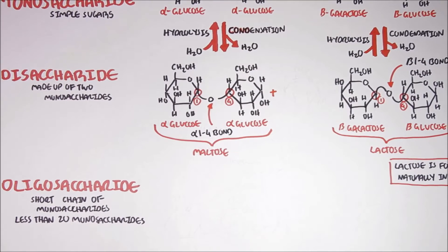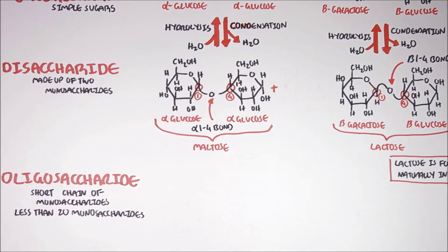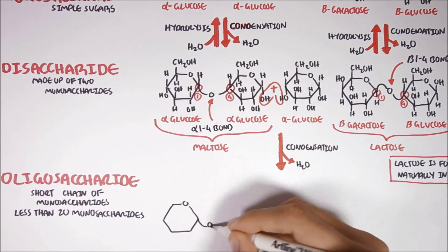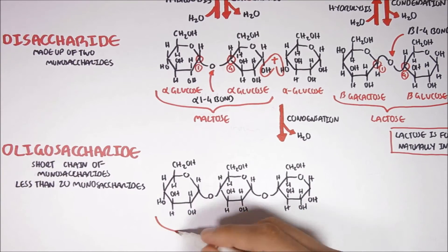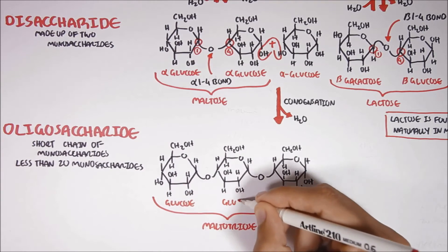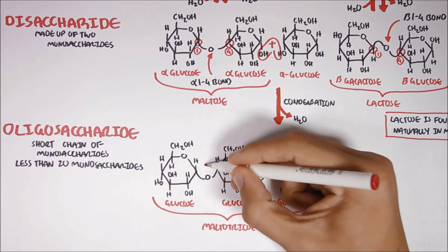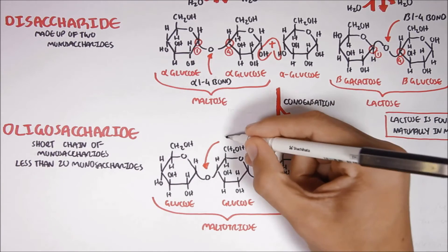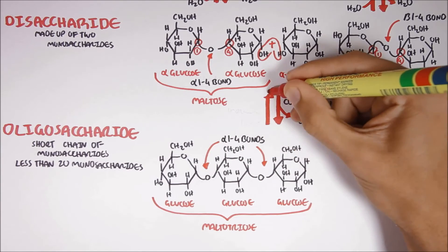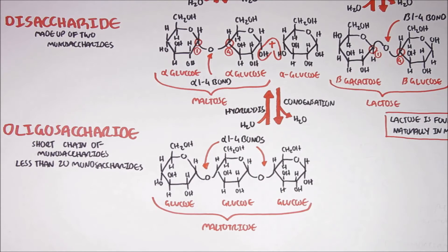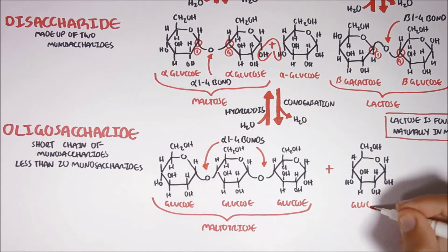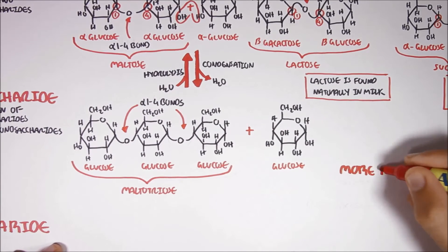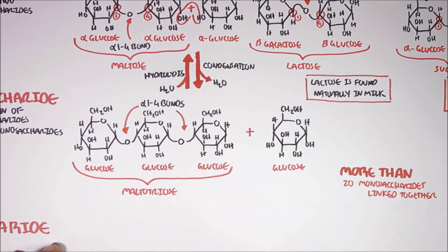For an example of an oligosaccharide: if we take maltose and add another glucose molecule to it through a condensation reaction, we can form an additional alpha-1,2,4 glycosidic bond. This oligosaccharide is called maltotriose — tri as in three. Maltotriose is made up of glucose molecules linked together by alpha-1,2,4 glycosidic bonds. To break down these bonds requires hydrolysis — the addition of water. This structure can keep growing with the addition of more glucose molecules, but when the oligosaccharide eventually exceeds 20 monosaccharides, the carbohydrate is then referred to as a polysaccharide.